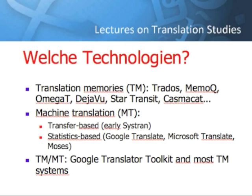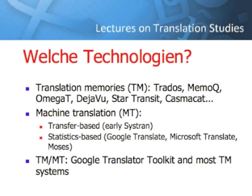So what technologies are we talking about here? Well, traditionally, really since the 1990s, we've had translation memories — TMs — of which the main brand names are listed. I've just got a few here: Trados, memoQ, Omega T, etc. These are tools that store your previous translations. As you translate a new text, you finish that sentence or chunk, and the source text and your translation of it go into a memory.